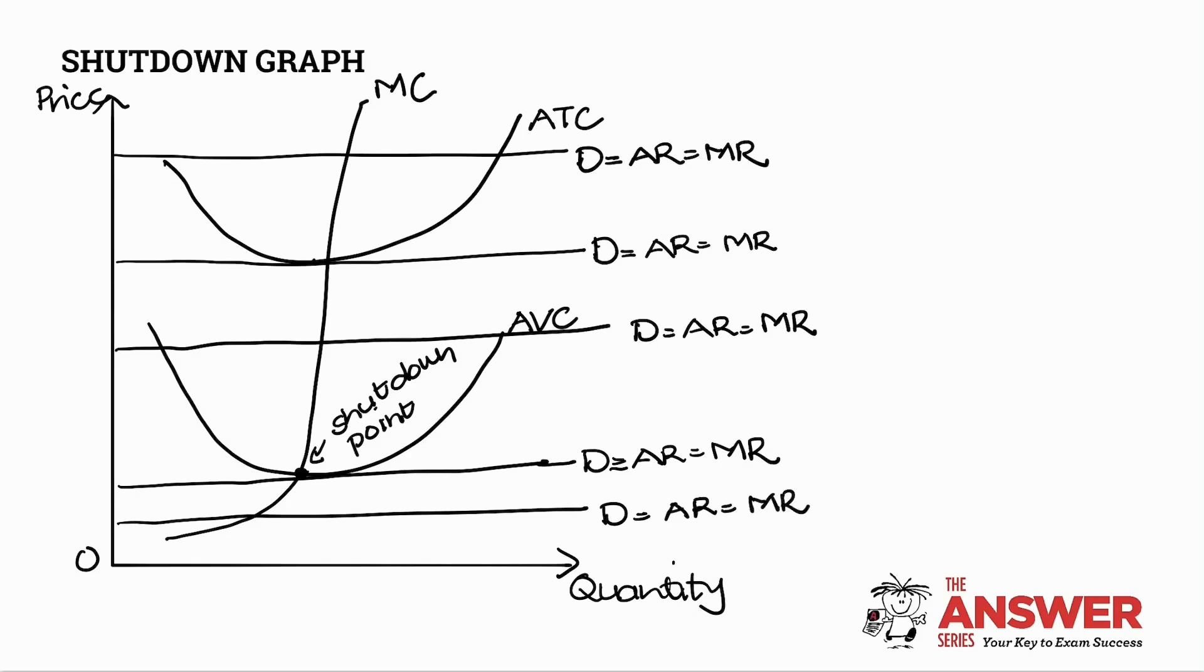So I'm just going to fill in all my labels. Call that E, call that D, C, B and A. That will be P1, P2, P3, P4 and P5.